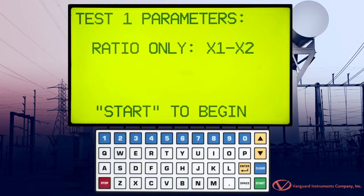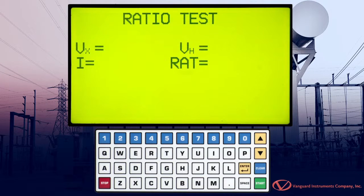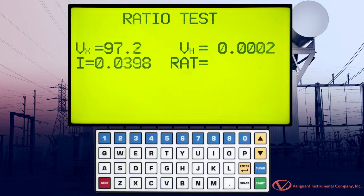Now a summary of the test parameters will be displayed. Press the Start key to start running the test. The EZCT-2000C will start performing the ratio test.